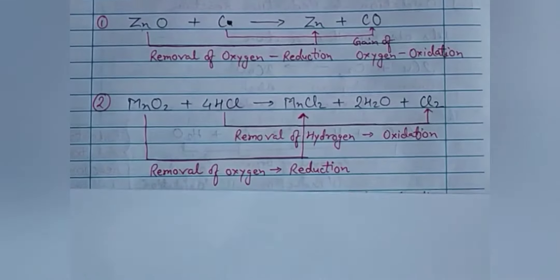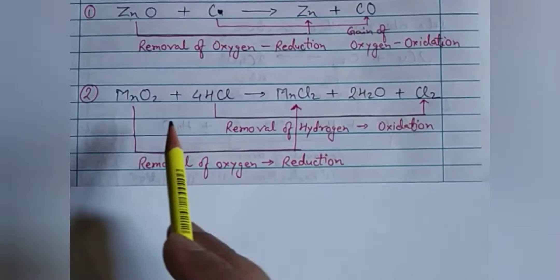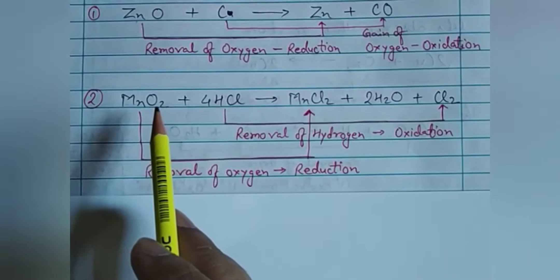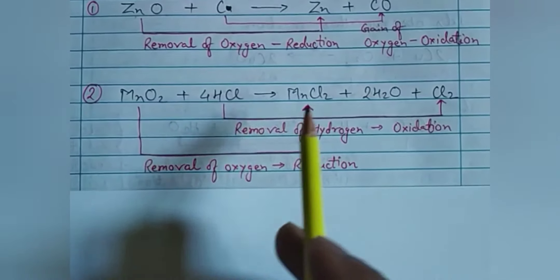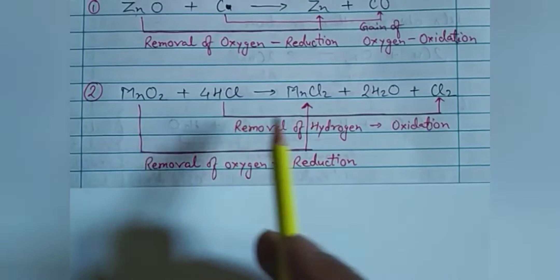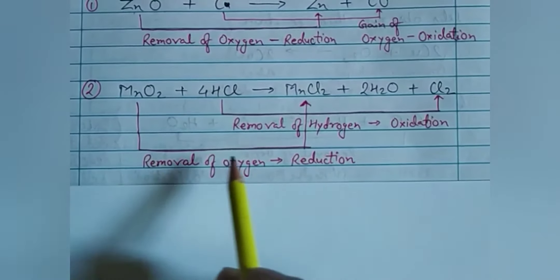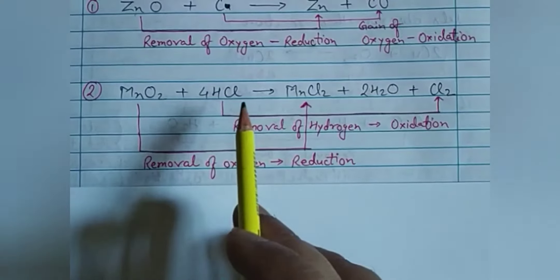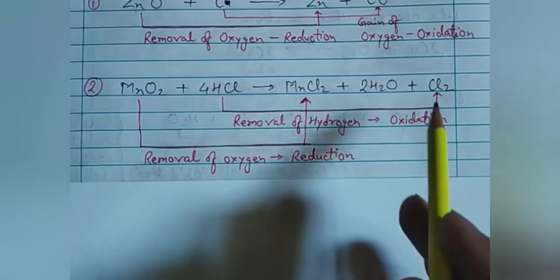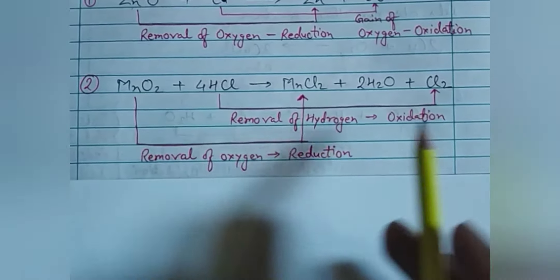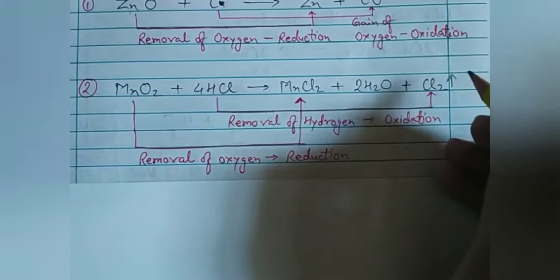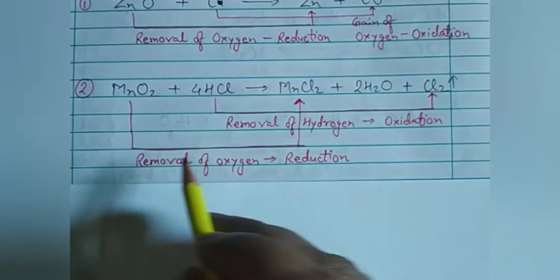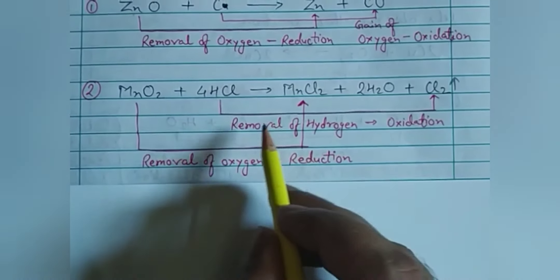One more example: magnesium oxide reacted with hydrochloric acid. The magnesium oxide loses oxygen and forms magnesium chloride. The removal of oxygen means magnesium oxide is getting reduced. In hydrogen chloride, hydrogen is removed and we get chlorine gas. Removal of hydrogen is called oxidation.